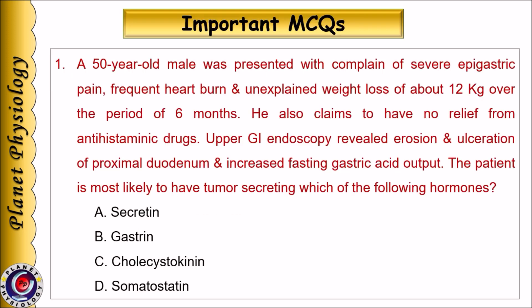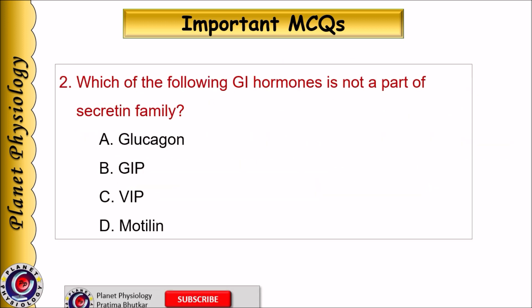Let us study some important MCQs. A 50-year-old male presented with complaints of severe epigastric pain, frequent heartburn, and unexplained weight loss of about 12 kg over 6 months. He also claims to have no relief from antihistaminic drugs. Upper GI endoscopy revealed erosion and ulcerations of the proximal duodenum and increased fasting gastric acid output. The patient is most likely to have a tumor secreting which of the following hormones? A. Secretin, B. Gastrin, C. Cholecystokinin, D. Somatostatin.